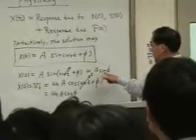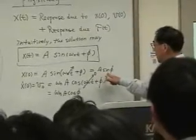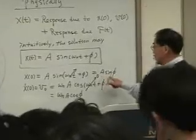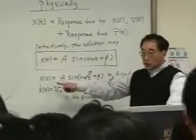Okay, here is an A sin phi, and if I square it, then I will get A squared sin phi squared equals x0 squared, right?